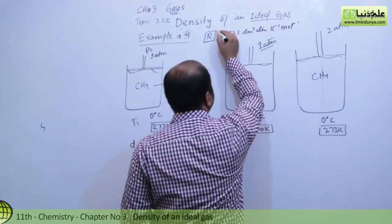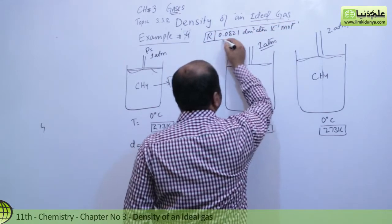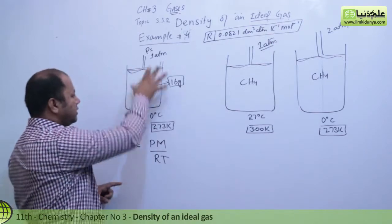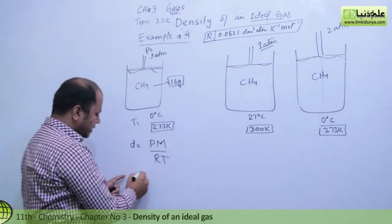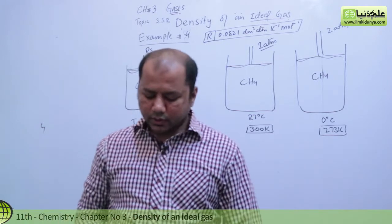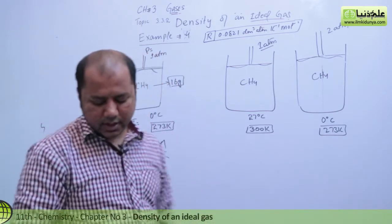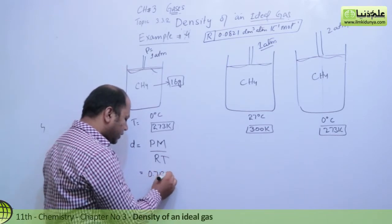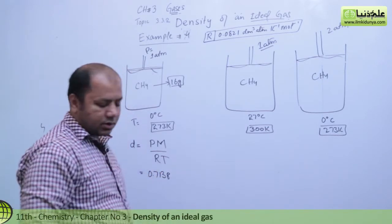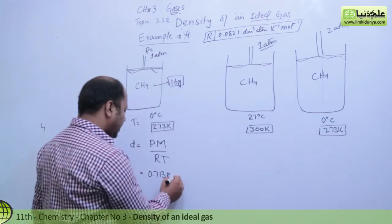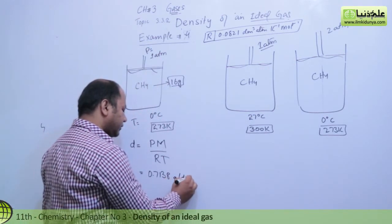After applying these values according to this situation in this equation, we get the answer which is 0.7138. You can do it, 0.7138, and density unit is grams per decimeter cube.